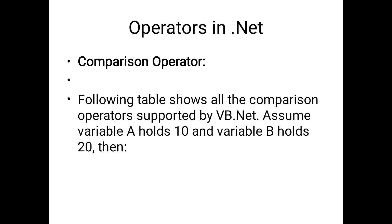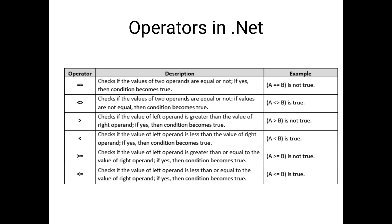The next type of operator is the comparison operator. The following table shows all the comparison operators supported by VB.NET. Assume here variable A holds value 10 and variable B holds 20. The list of all comparison operators includes: double equal to, not equal to, greater than, less than, greater than or equal to, and less than or equal to. You have to remember this comparison operator list.